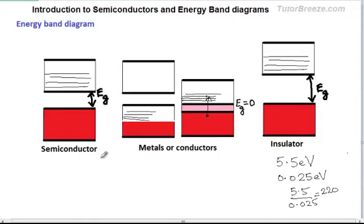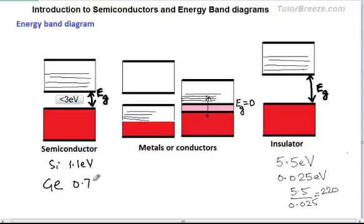The band gap pattern of a semiconductor is quite similar to that of an insulator, except that the energy gap is much smaller. So electrons have some probability of jumping the gap due to thermal agitation. The band gap of silicon is about 1.1 electron volt and that of germanium is about 0.74 electron volt. The electrons that reach the conduction band are free to move and conduct electricity. With an increase in temperature, more electrons jump from the valence band to the conduction band, increasing the conductivity.